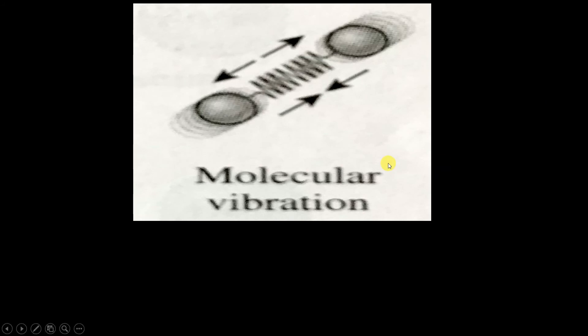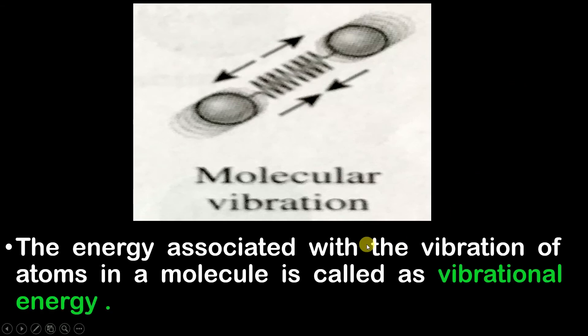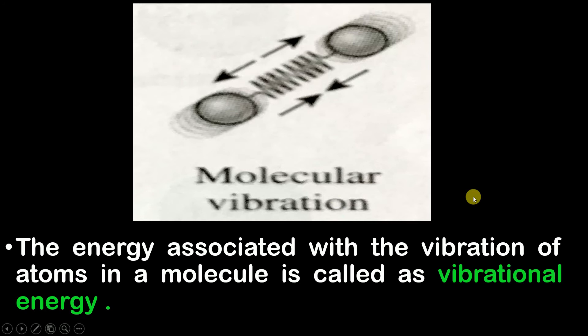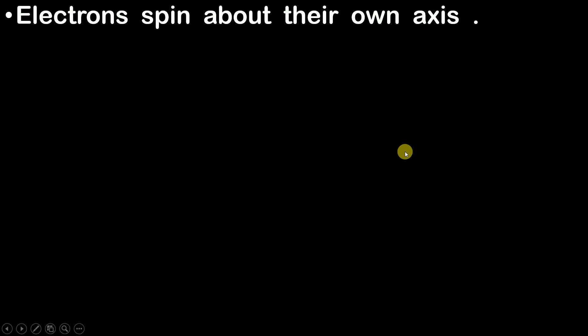Moving on to the third microscopic form of energy: in a polyatomic molecule, at high temperatures, the atoms vibrate about their center of mass. If they are vibrating, they obviously have some energy. The energy associated with the vibration of atoms in a molecule is called vibrational energy. These are called microscopic forms of energy because their quantity is small.